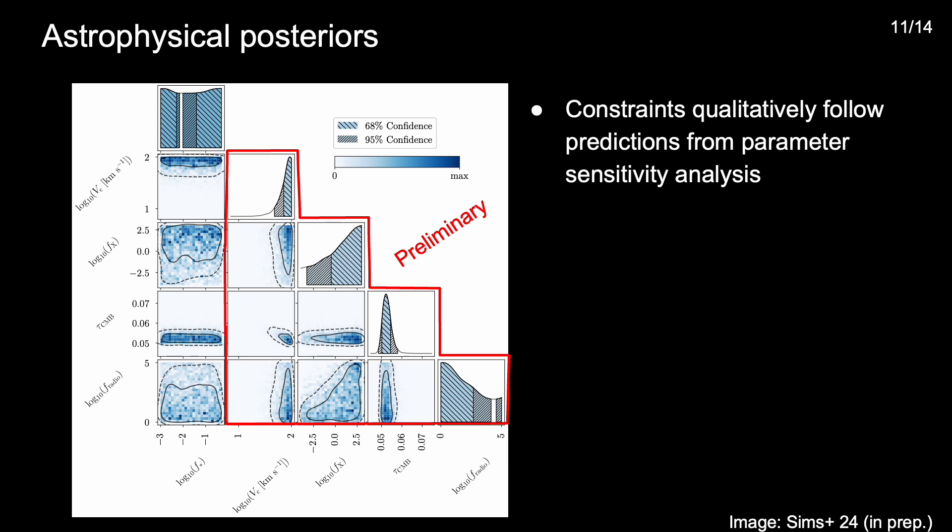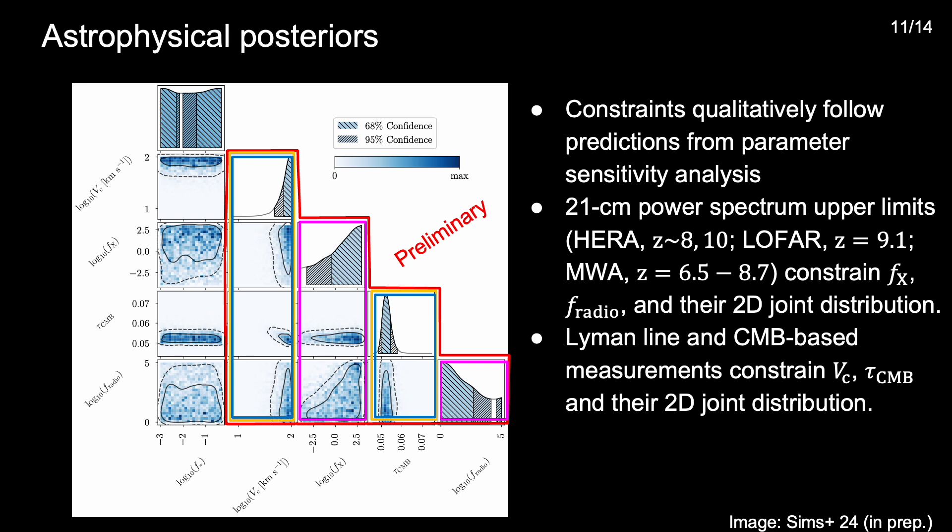This triangle plot shows the posterior distribution of the parameters resulting from the joint fit of constraints derived from these datasets. And we see that the constrained parameters can be understood in the context of the parameter sensitivity plots we looked at a second ago. In particular, the 21cm power spectrum upper limits primarily constrain the combination of low galactic X-ray efficiency and high radio production efficiency, disfavoring the top left corner of the 2D posterior of those two parameters.